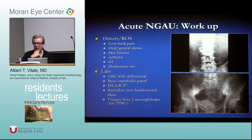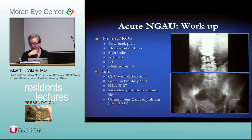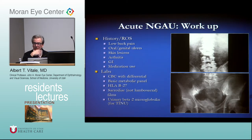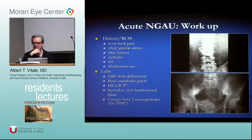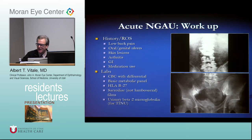Sacroiliac films are the films to get for these patients — that's a board-type question — rather than lumbar-sacral spine films. The lumbar-sacral spine films show ankylosis, which means the disease is already advanced. Sacroiliitis is a common feature of B27-associated disease, so if they ask what film to order, the answer is sacroiliac films. Rheumatologists nowadays go straight to MRI.